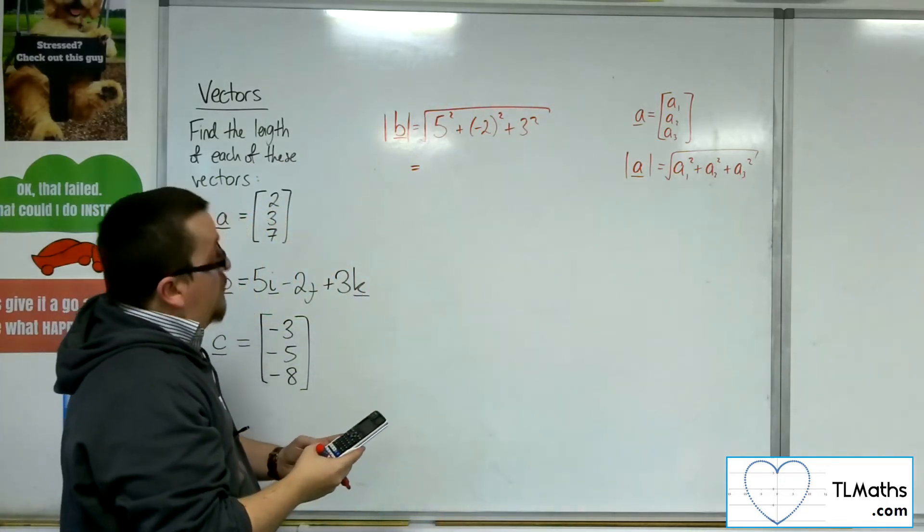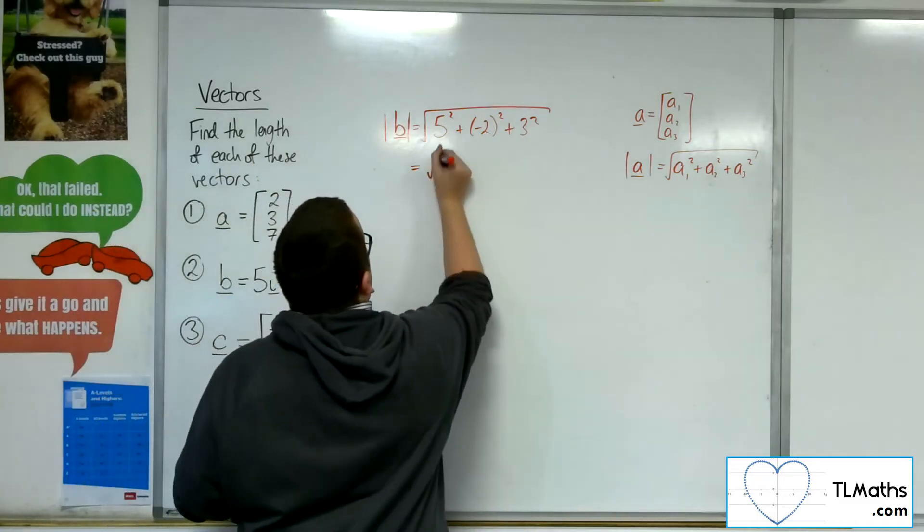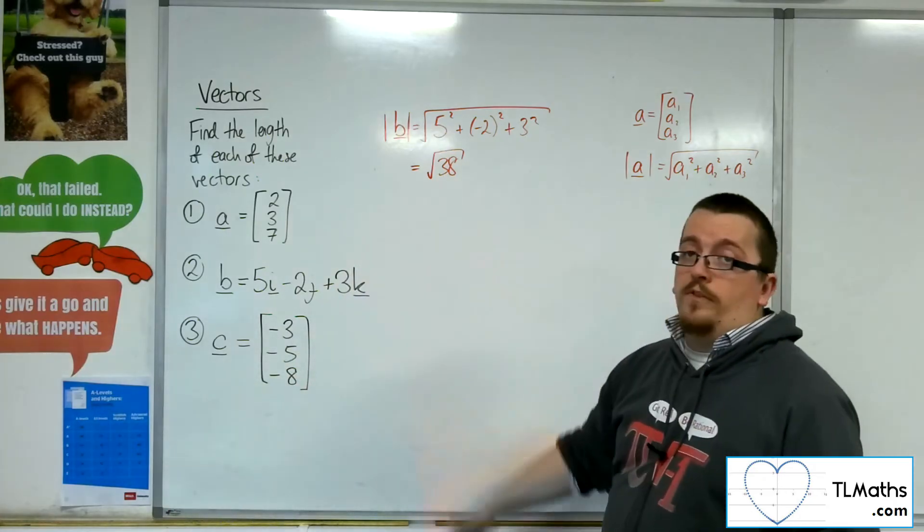So, square root of 25 plus 4 plus 9, and that's root 38. So, the length of vector B is root 38.